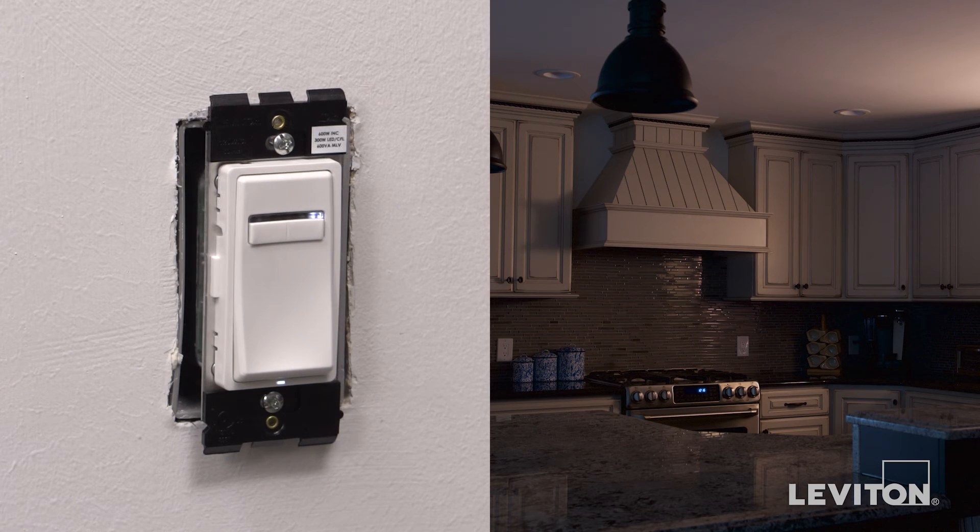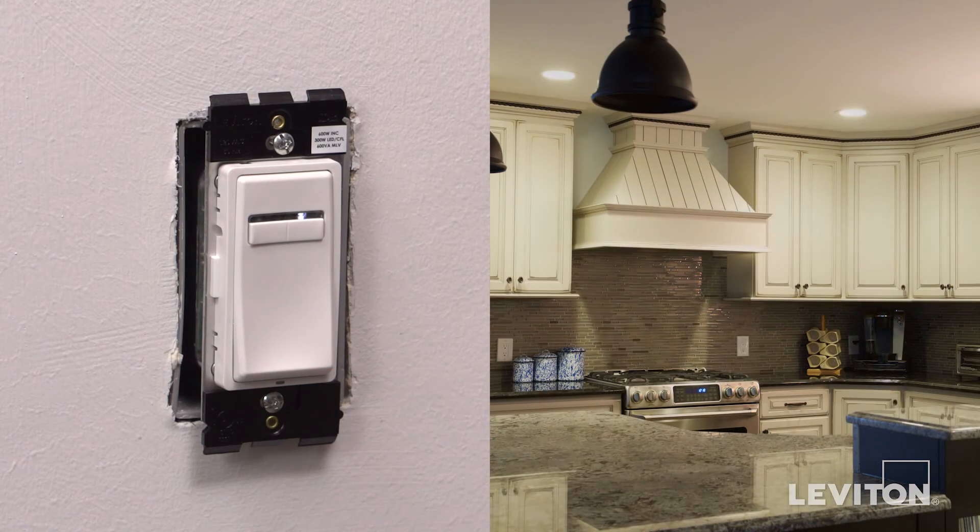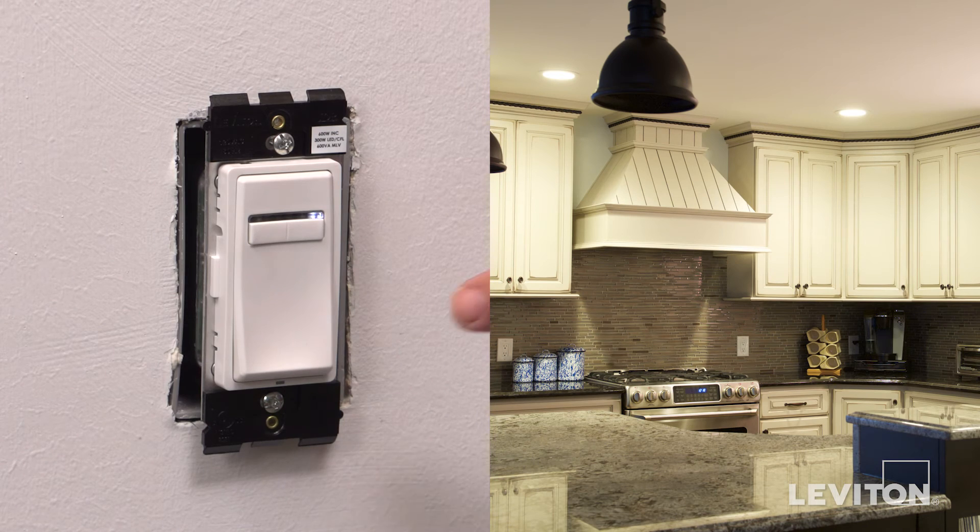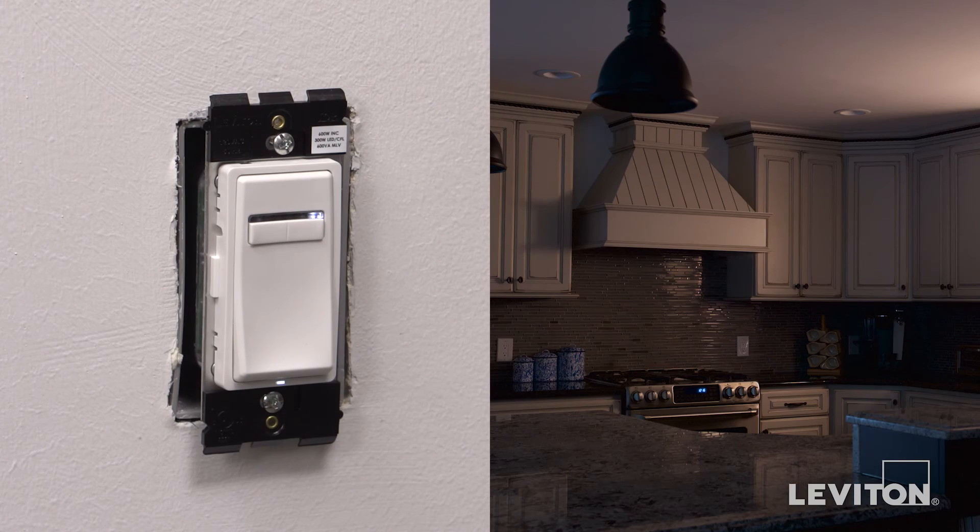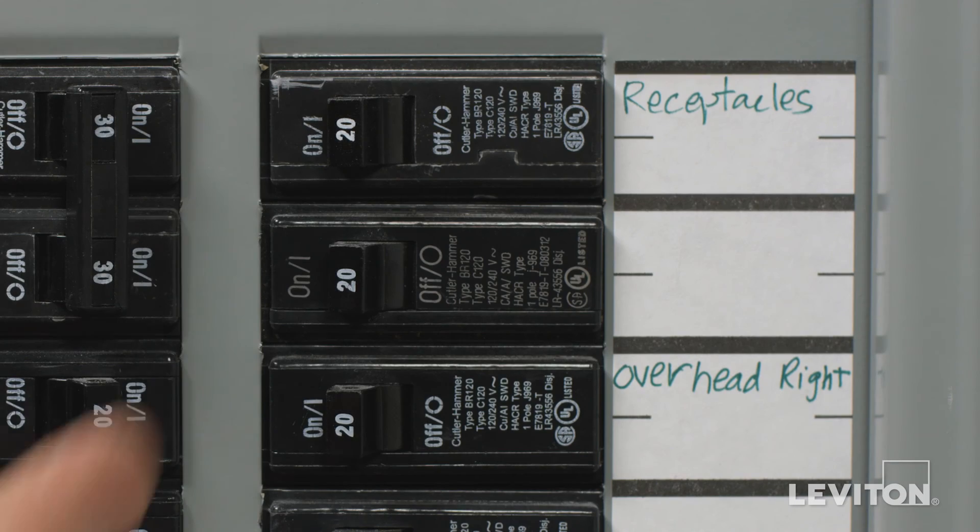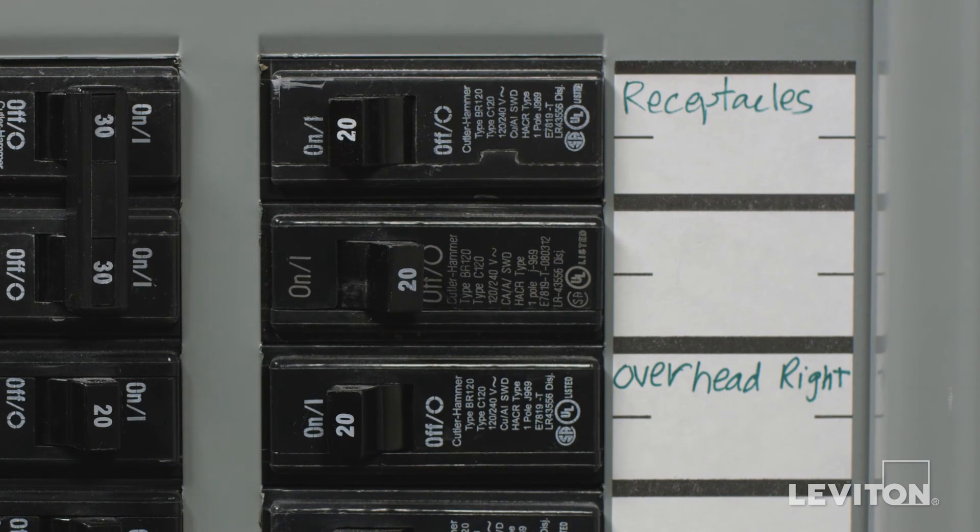Press the bottom of the switch to turn the light on. Press the bottom of the switch again to turn the light off. If functioning properly, switch the power off at the circuit breaker.